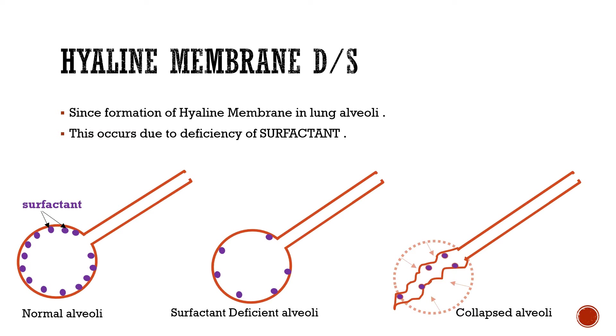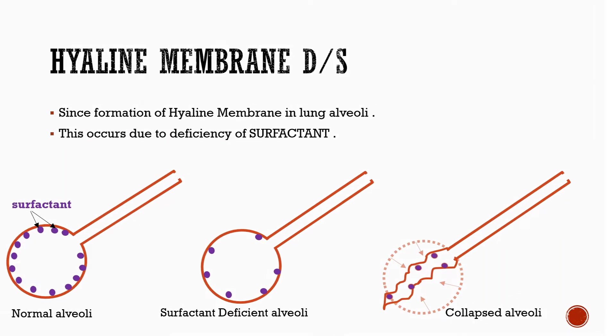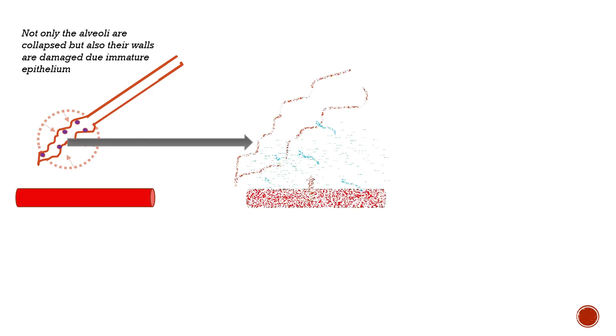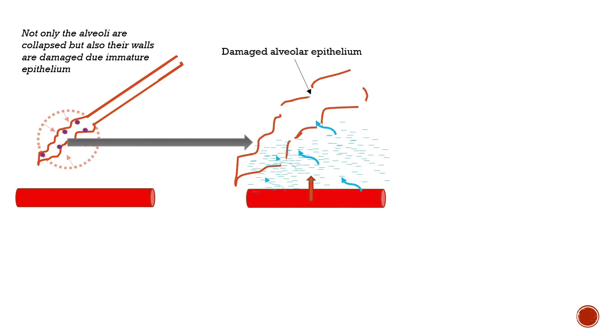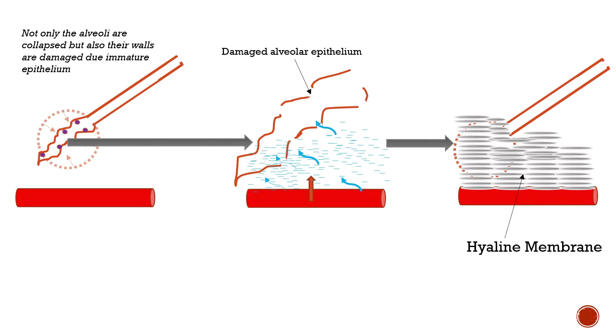That was just an overview of HMD. But actually, a lot more happens in the alveoli. Not only are the alveoli being collapsed, but also their walls are damaged due to immature epithelium. This damaged alveolar epithelium causes accumulation of exudates from blood, leading to a fibrosis-like condition which later gets cemented and forms a membrane-like structure. This is nothing but the hyaline membrane.